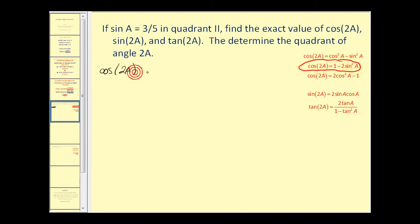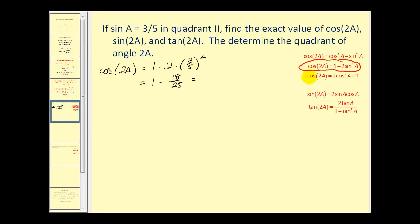We'll use one minus two times sine squared A. Since sine A is three fifths, we'll have three fifths squared. Three fifths squared is nine twenty-fifths; times two is eighteen twenty-fifths, which gives us seven twenty-fifths for cosine two A.